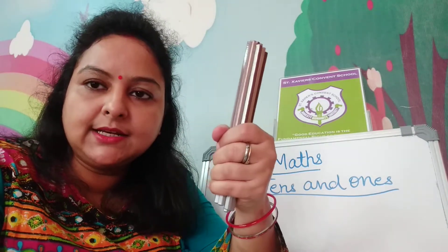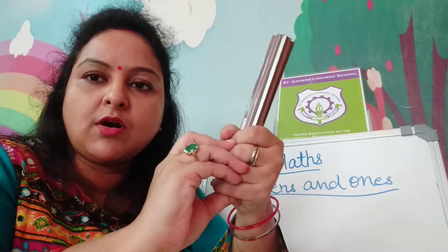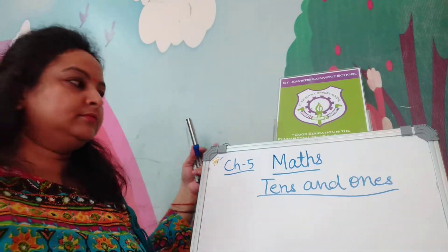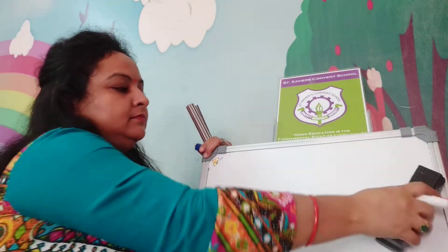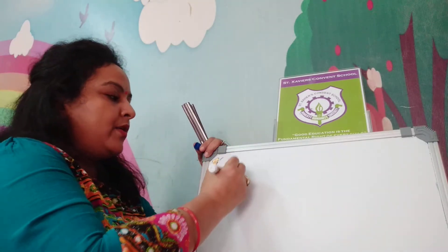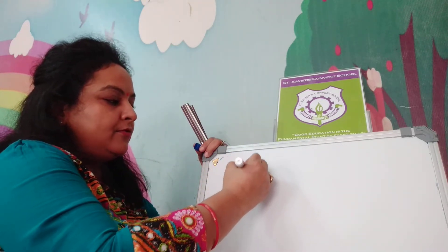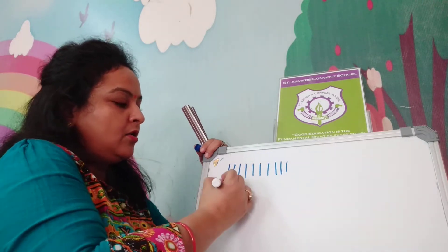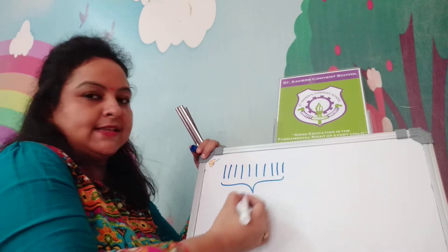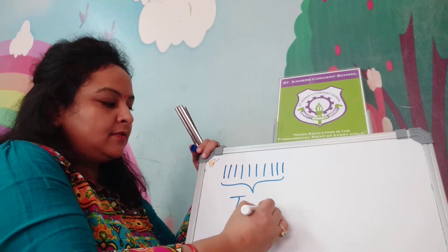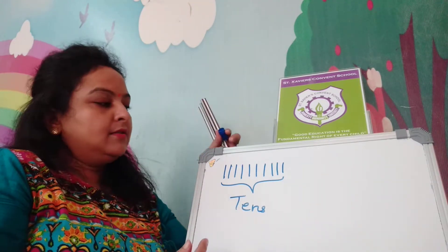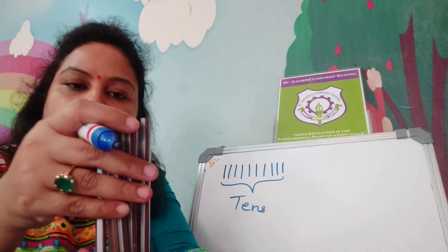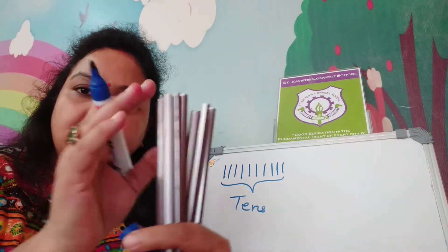The set of 10 things is called 10s. 1, 2, 3, 4, 5, 6, 7, 8, 9, 10 — all together we say it 10s. The bundle of 10 is called 10s. Here are 10 pencils, a bundle of 10s — one bundle of 10s.